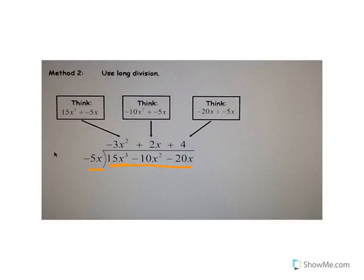How do I change negative 5 into 15x cubed? I'm going to multiply it by negative 3x squared — that gives me 15x cubed. Then I subtract it out and bring down the negative 10x squared. How do I change negative 5x into negative 10x? By multiplying by 2x. That gives zero, then I bring down negative 20x. How do I change negative 5x into negative 20x? By multiplying by 4.